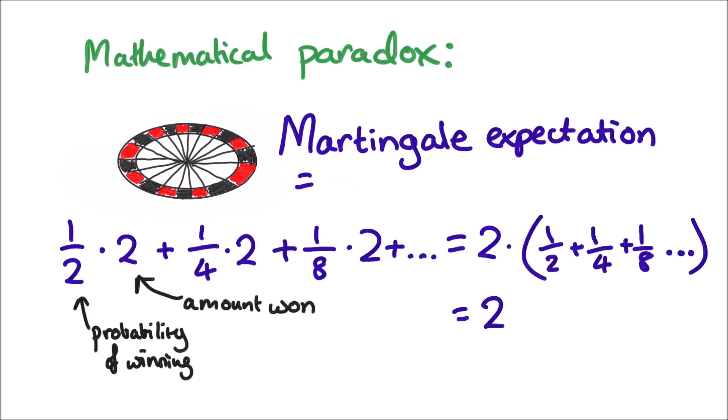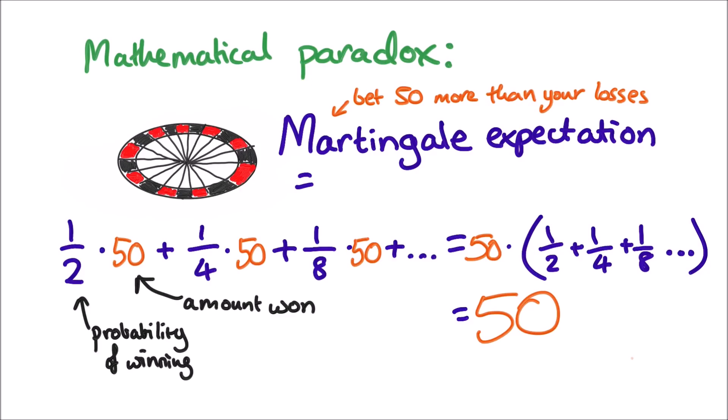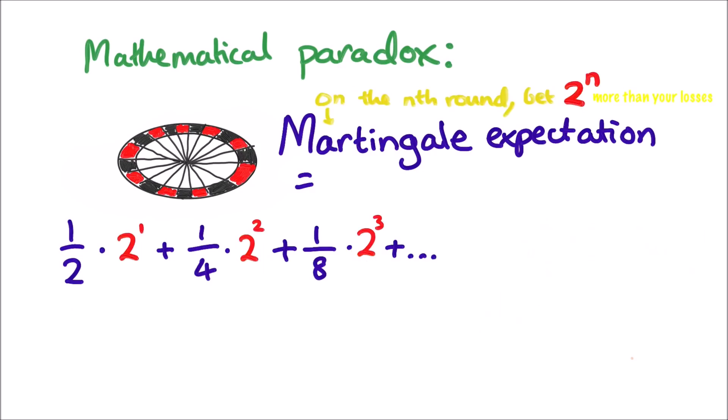In fact, I can make this number anything I want. For example, I can bet 50 more than my total losses each time, then the expectation is 50. But I can make it worse again by using this strategy. Say you've lost a few times so far and it's the nth round, then bet all that you've lost so far plus 2 to the power of n. Look at that expectation value, it's infinite.